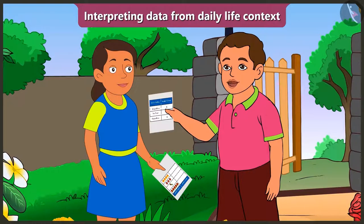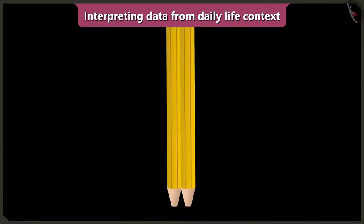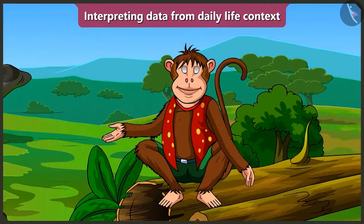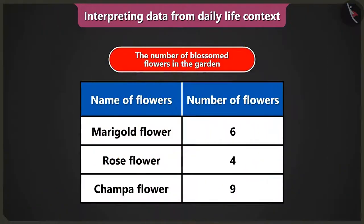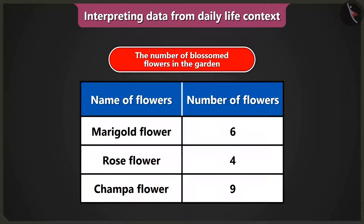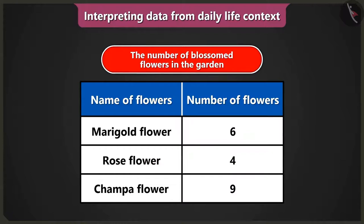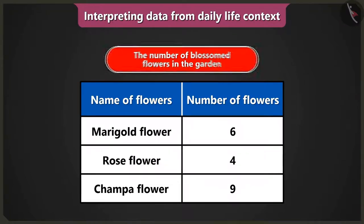How is that? Come on, let me teach you. Today in this video, we will learn to interpret data from the table. Look, there are different flowers in this garden. How many flowers have blossomed? That data has been collected and filled in the table. That's why it has been written on the top of the table: the number of blossomed flowers in the garden.